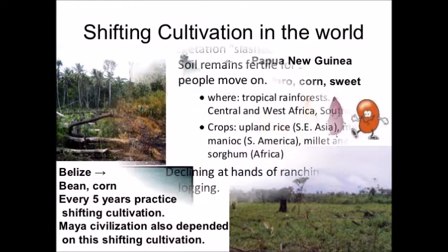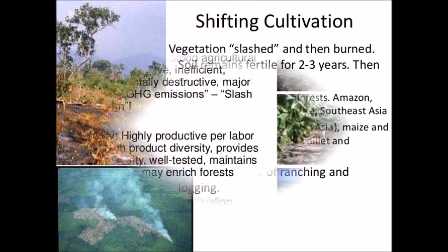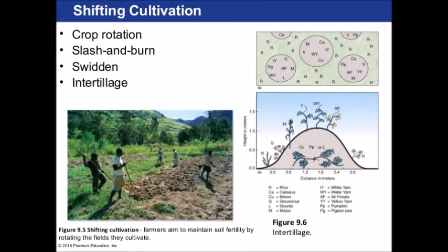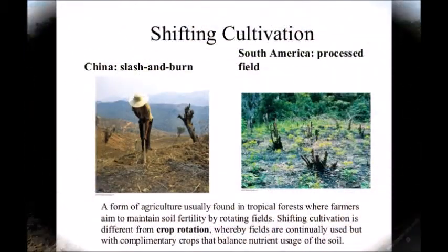The second one is shifting cultivation. This system works on a principle just opposite to that of sedentary cultivation. Land under this system is used for a few years until the fertility level drops, when the farmer moves on to a new plot of land. This type of farming is practiced by less advanced societies. In India, in the tropical regions, it is also called burn and slash cultivation.